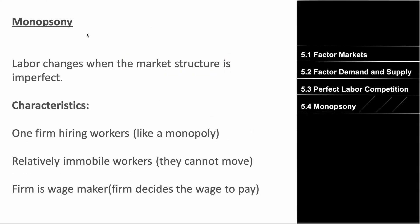Monopsony operates pretty similarly to a monopoly — it's one major firm hiring workers. Workers are relatively immobile, so they can't move much between firms or geographically. The firm is a wage maker, meaning the firm decides the wage it pays. This is because there's only one firm and workers have different skills, so the firm can determine how much it pays its workers — they have that control, kind of like how a monopoly can determine price.